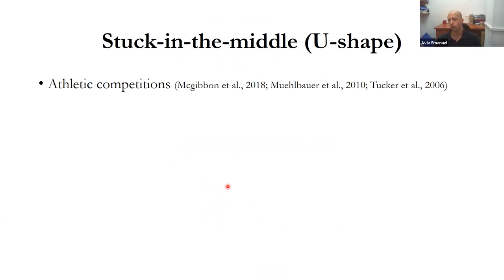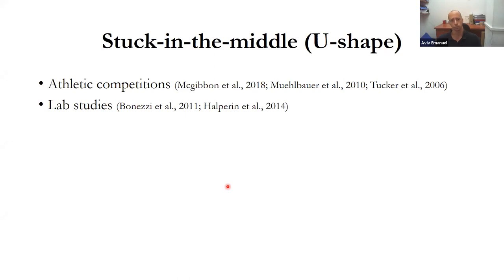This U-shaped pattern exists in other fields as well — athletic competitions such as swimming, cycling, and rowing — and also in lab studies. When we observe cognitive behaviors, like spotting typos over a series of nine articles, people catch typos at the fastest rate at the beginning and end of a task, but not in the middle. And also when people perform muscular contractions repeatedly, they also exhibit this U-shaped pattern.